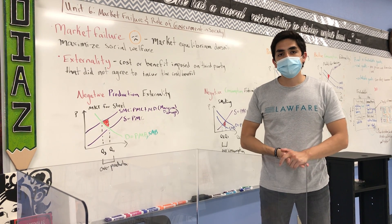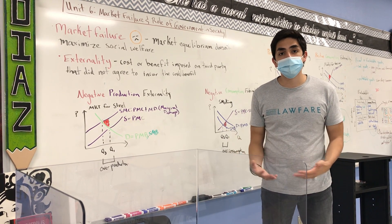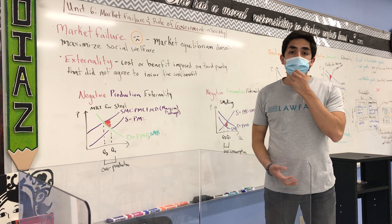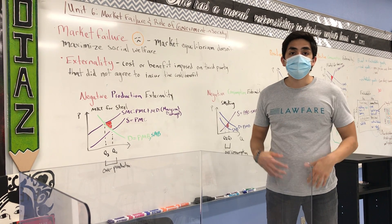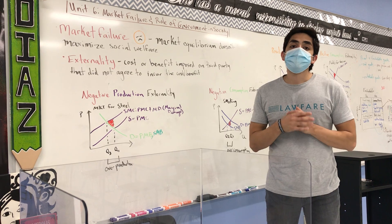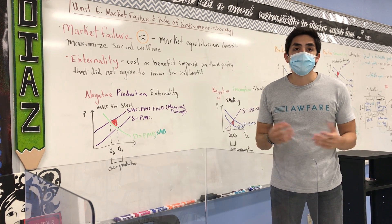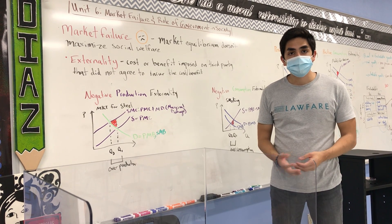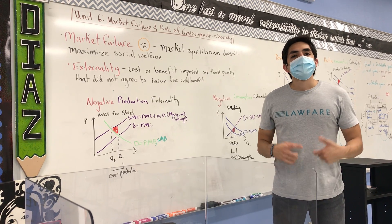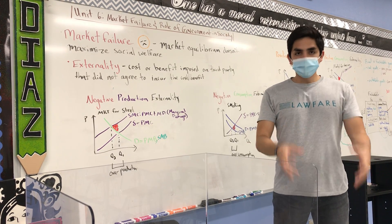We said in Unit 2 that markets have this special power associated with them — free markets — that they can be efficient ways of allocating resources, and they can be social welfare maximizing ways of allocating resources. Under certain conditions. And that's the important part: under certain conditions.